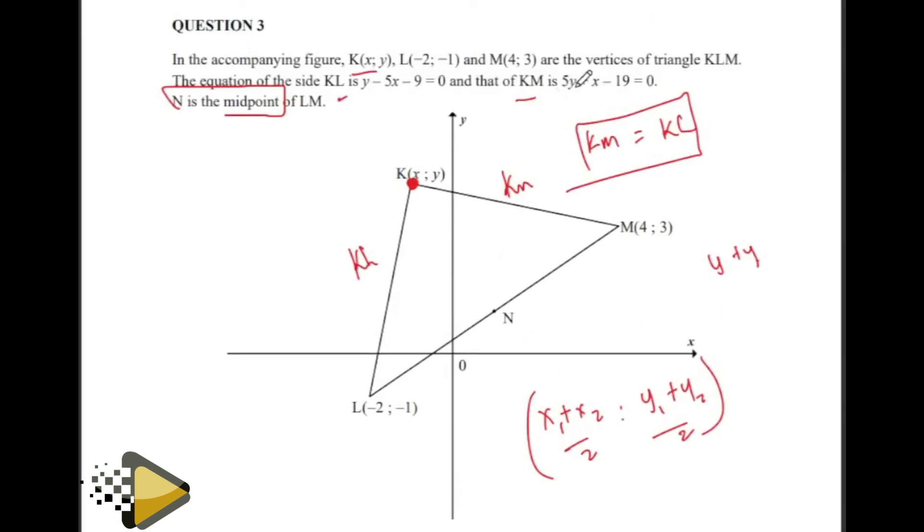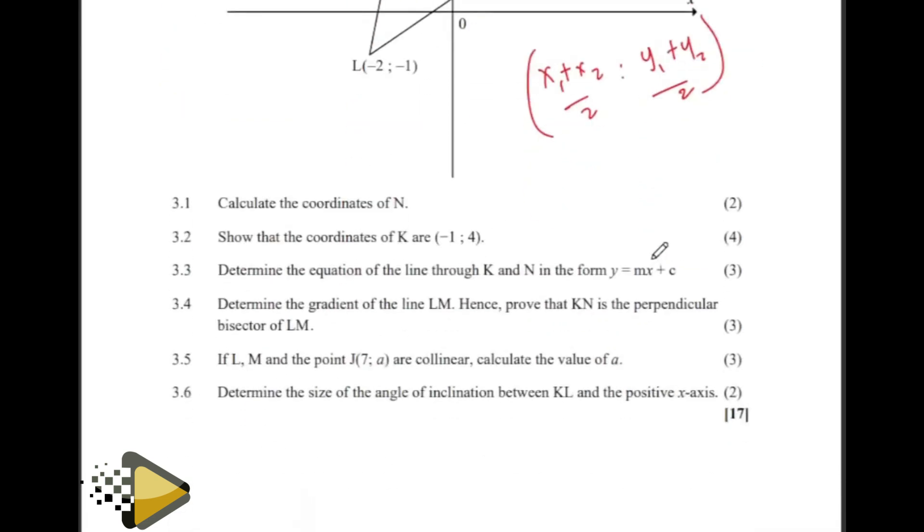You can make Y the subject in both equations, or you can make Y the subject in the first equation. Let's say Y is equal to 5X plus 9. Get this Y and then replace it there. You solve for X. Then that X, get it, substitute it in either equation, and get the values of Y. When lines are meeting, the lines are equal.